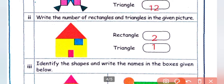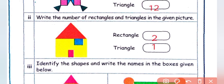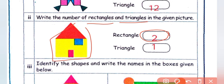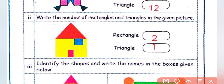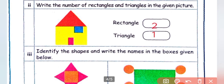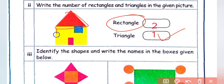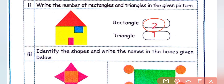Next, write the number of rectangles and triangles in the given picture. Count the triangles — there is 1 triangle. Count the rectangles — there are 2 rectangles. So in the picture: rectangles = 2, triangles = 1.